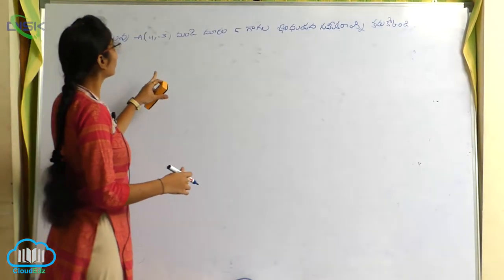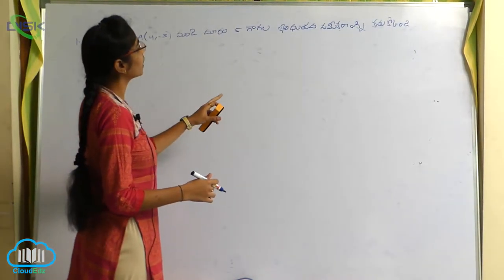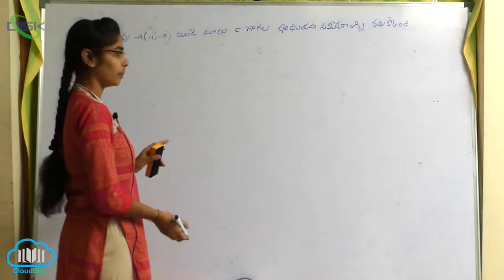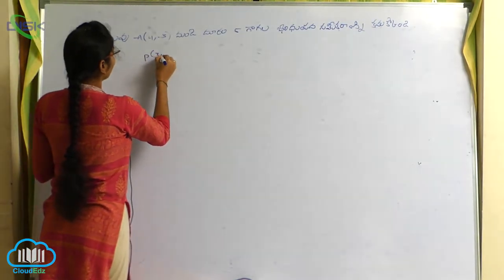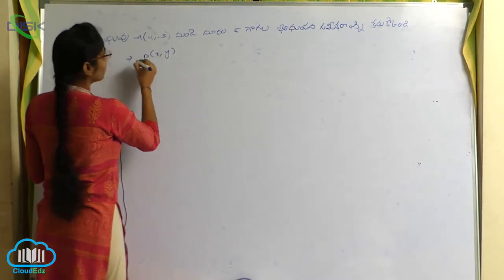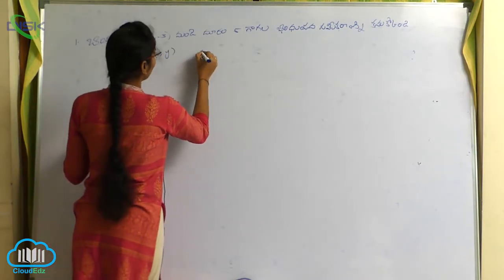Bindu A (4, -3) nundi duram 5 gagala bindu pala sami karan ni kanu kondi. Ok children, ikida P of (x, y) anu kundna manam suppose, ikida duram enti charu, 5 charu.